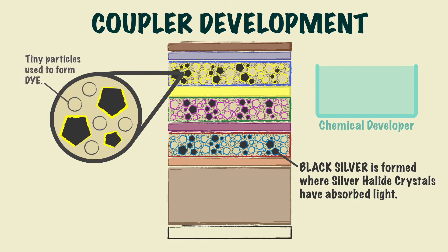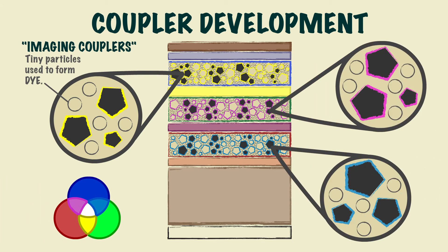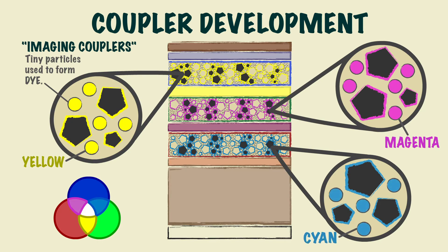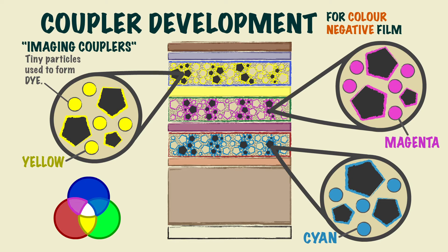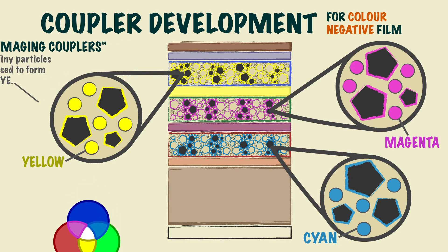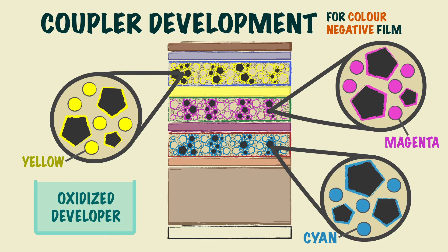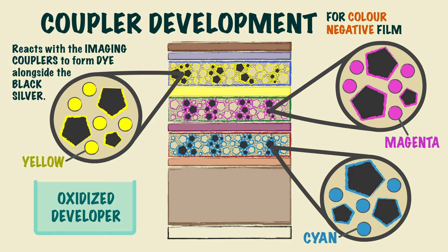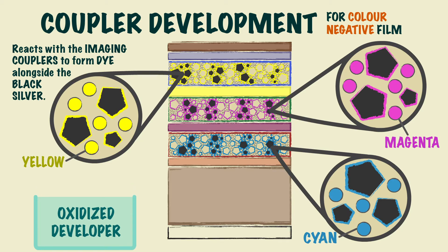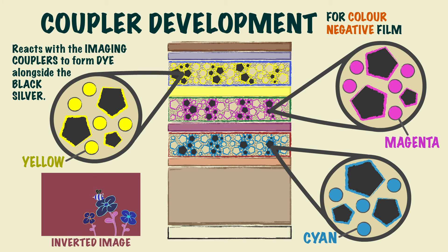Amongst the crystals there are tiny particles used to form dye, also known as imaging couplers. Each layer is dyed in inverted colours — the blue sensitive layer would be yellow, the green sensitive layer would be magenta, and the red sensitive layer would be cyan. For colour negative film, when black silver is formed, the colour developer itself is oxidised and then reacts simultaneously with the imaging couplers to form dye alongside the black silver. Therefore, an inverted photographic image is created.